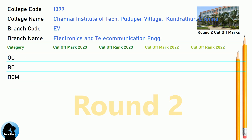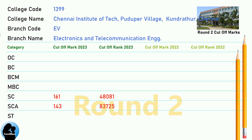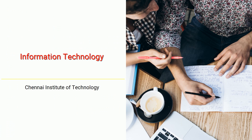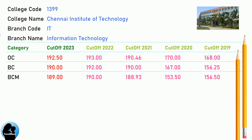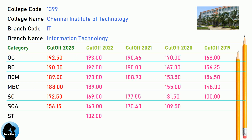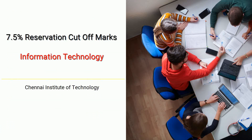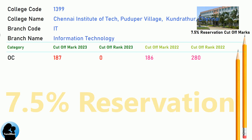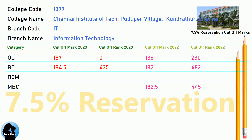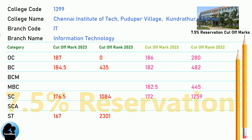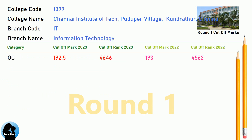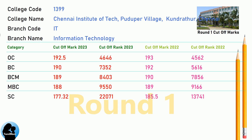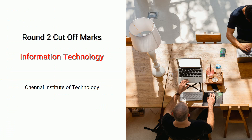DNA Cut-off for Chennai Institute of Technology in Information Technology. DNA 7.5 Reservation Cut-off for Chennai Institute of Technology in Information Technology. DNA Round 1 Cut-off for Chennai Institute of Technology in Information Technology. DNA Round 2 Cut-off for Chennai Institute of Technology in Information Technology.